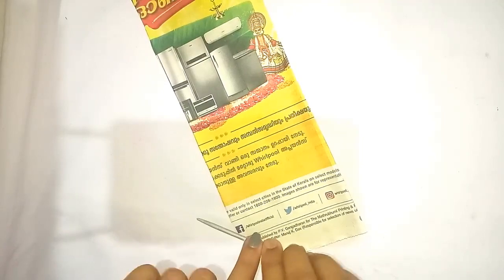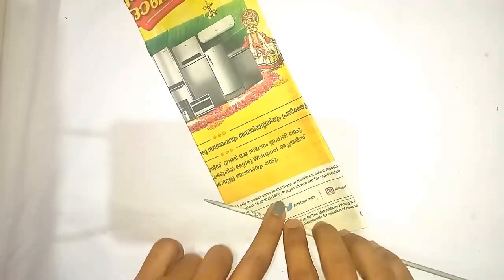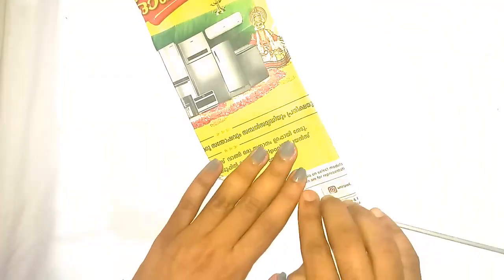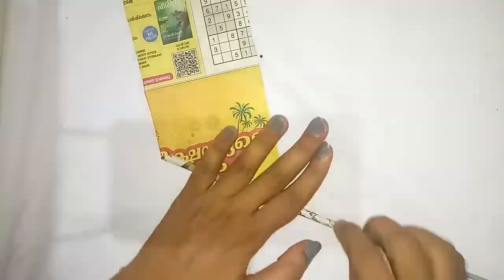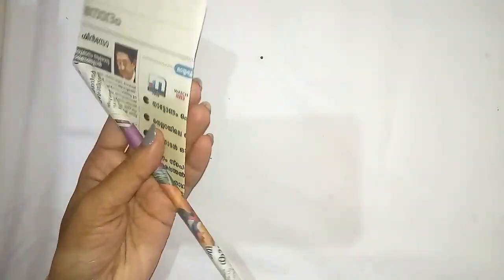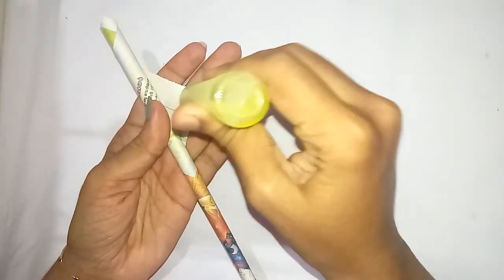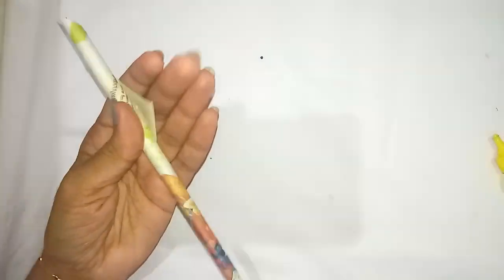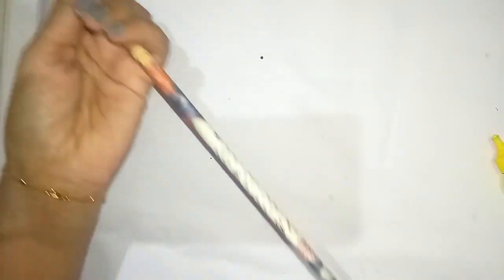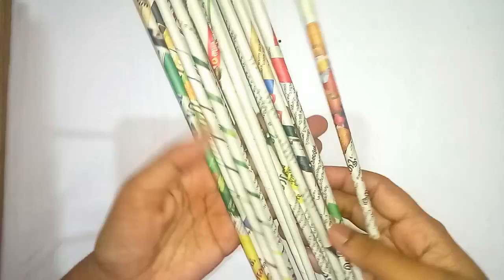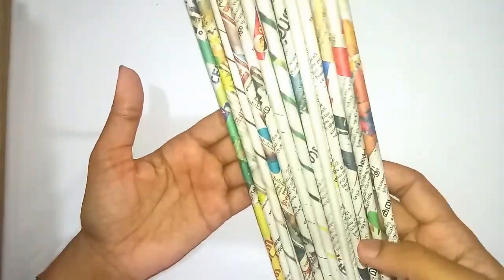If you don't have a knitting needle, you can use pen refills, pencils, pens, or even a toothpick to roll the newspapers. When you are about to reach the end of the paper, apply glue and stick the paper. Our paper tube is ready.